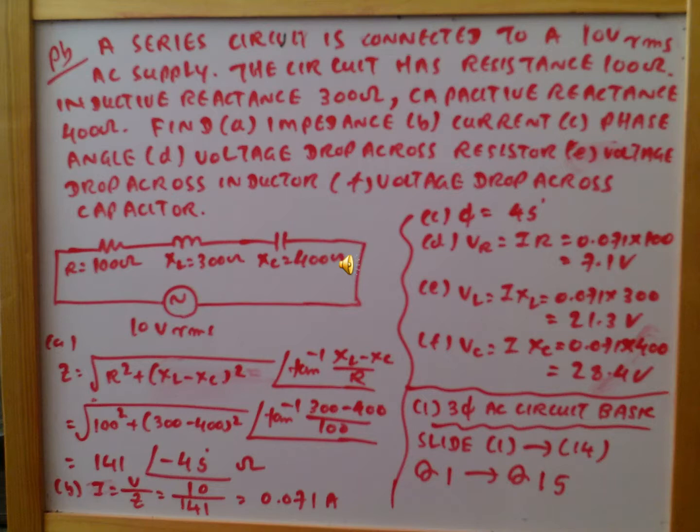The voltage across the resistor VR equals I multiplied by R, which is 0.071 multiplied by 100, giving 7.1 volts. VL equals I multiplied by XL, which is 0.071 multiplied by 300, giving 21.3 volts. VC equals I multiplied by XC, which is 0.071 multiplied by 400, giving 28.4 volts.